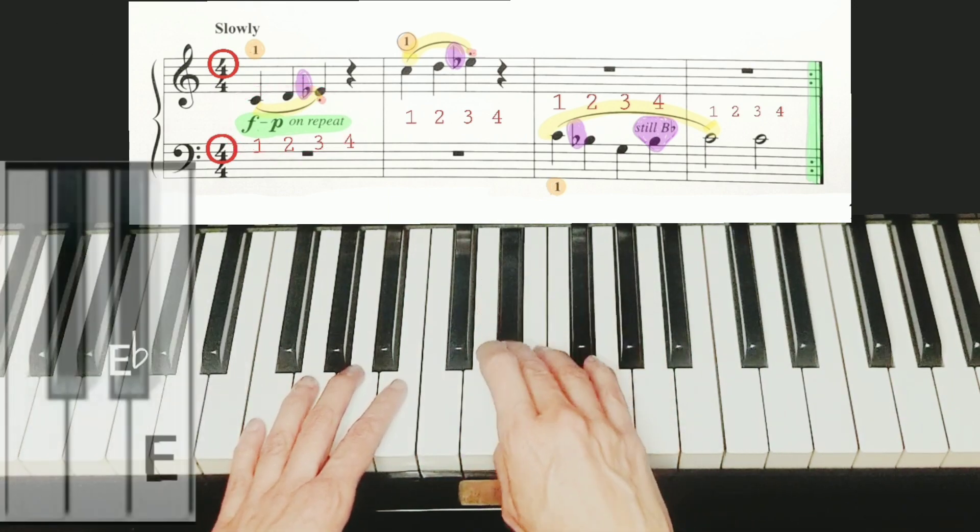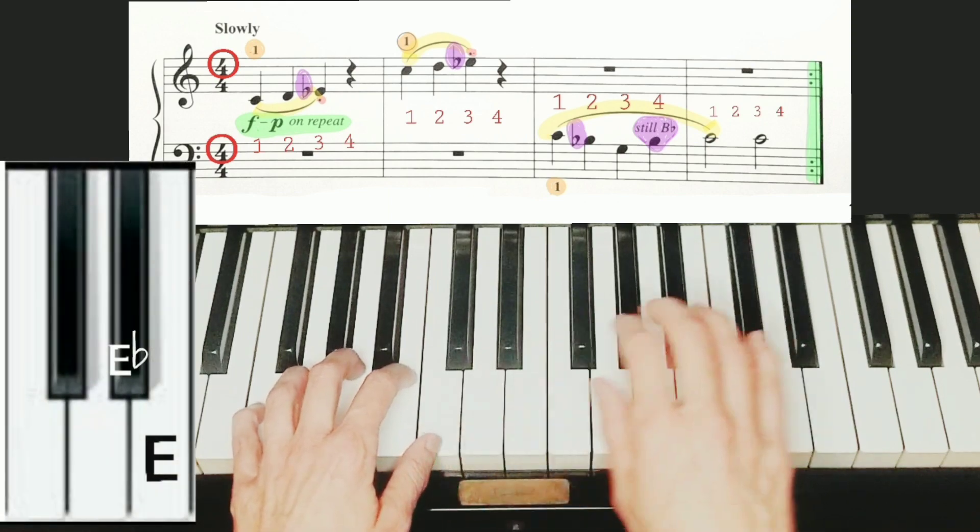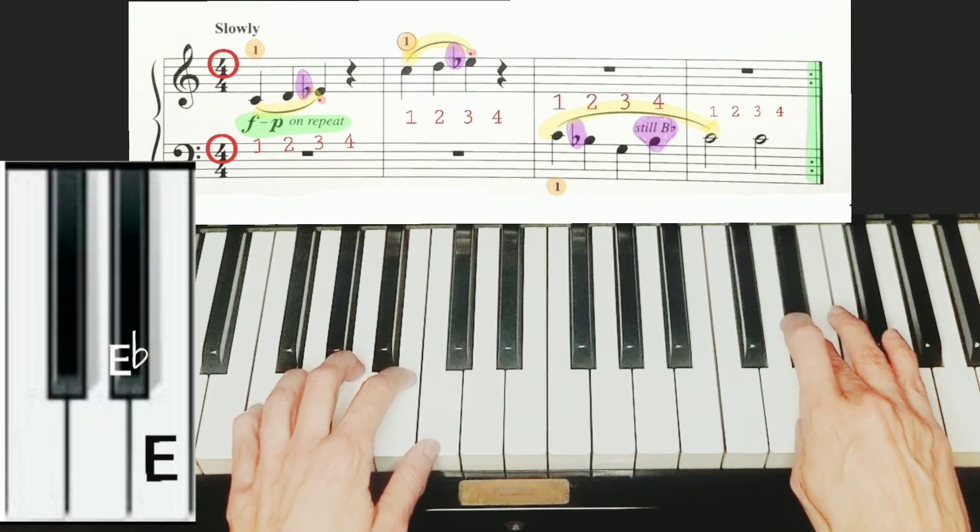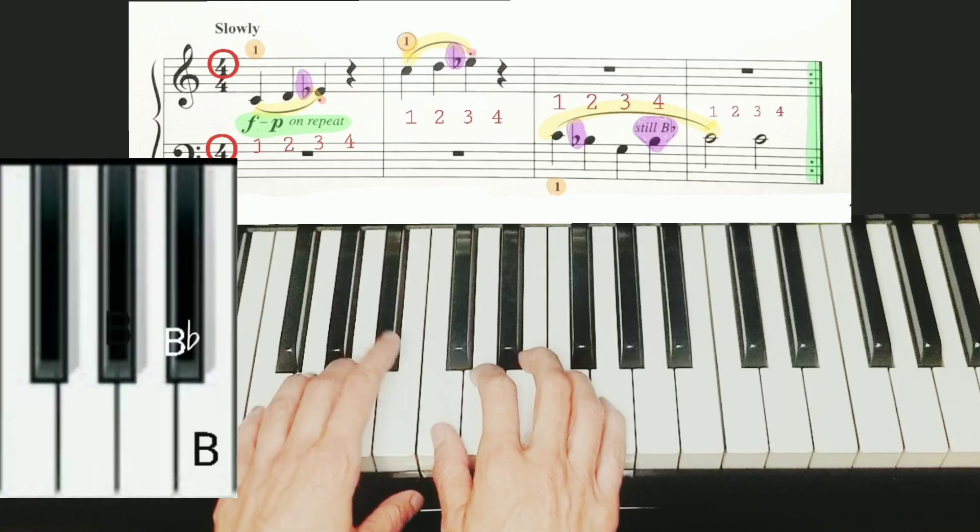First, this is E flat. Then we have a flat sign on treble E. And then we have another flat sign on B.